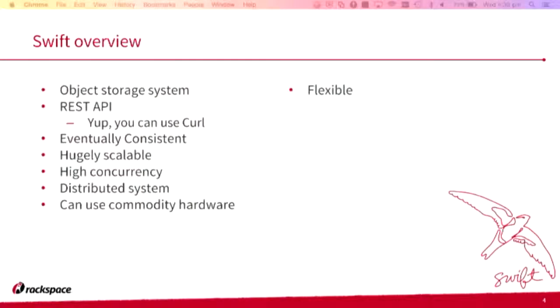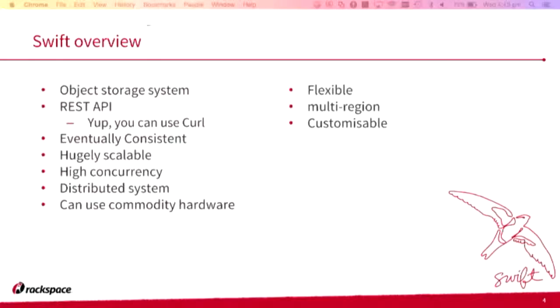There's the use of commodity hardware — it's pretty cool that you can grab a couple of servers, throw a bunch of hard disks in them, and let Swift manage that durability and failsafe for you. It's flexible — you can use it to match your workload. If you have a lot of concurrent connections, just scale the proxy layer. It's multi-region, so you can have a global geographic cluster. It's customizable, and any user can extend it through middleware.